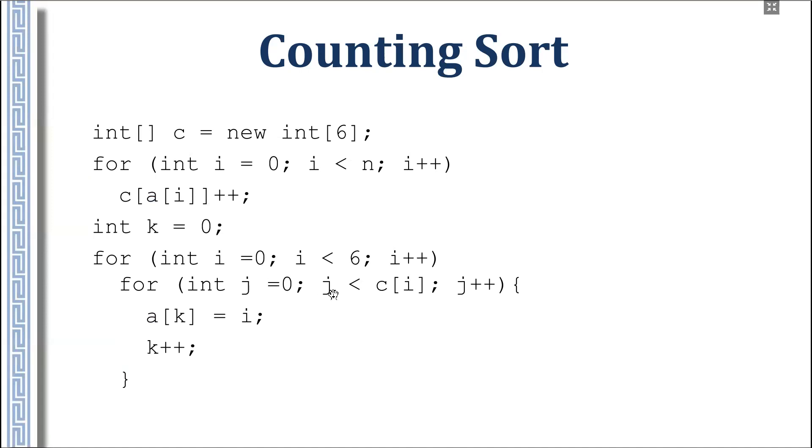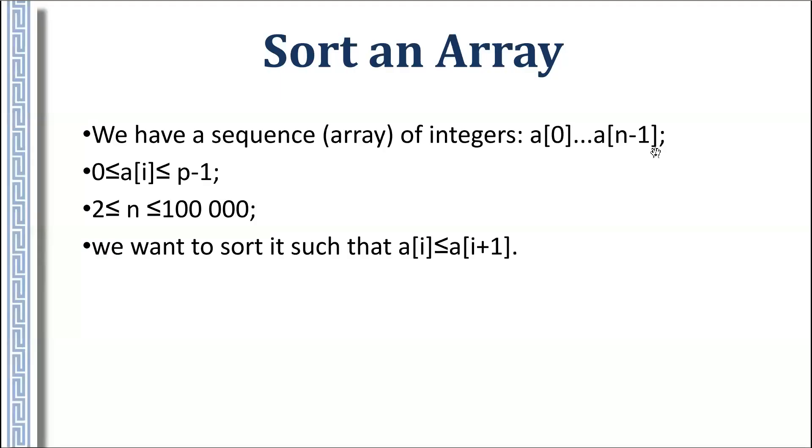We know, for example, i is zero. We should write zero, which means i, c0 times. So c0 times we have this for loop. c0 times we write i. Then c1 times we write 1. Then c2 times we write 2, and so on. We have index k as a common index for this result array that we construct.